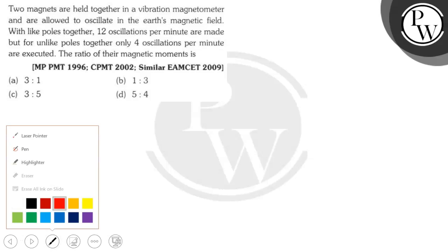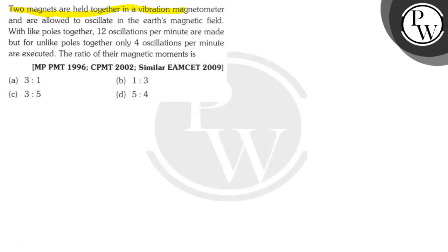Hello Bacho, let's read the question. Two magnets are held together in a vibration magnetometer and are allowed to oscillate in the Earth's magnetic field. With like poles together, 12 oscillations per minute are made, but for unlike poles together, only 4 oscillations per minute are executed. The ratio of their magnetic moments is...